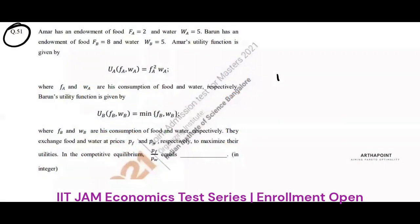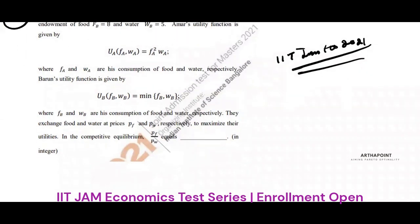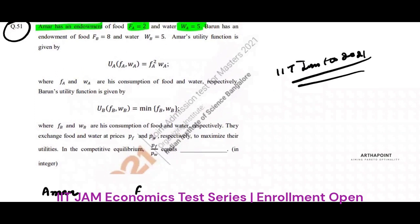This is question 5.1 of IIT Jam Economics 2021 paper. The question says there are two individuals. Amar has an endowment of food and water. Let's write down the endowment of Amar first: food is 2 units and water is 5 units.